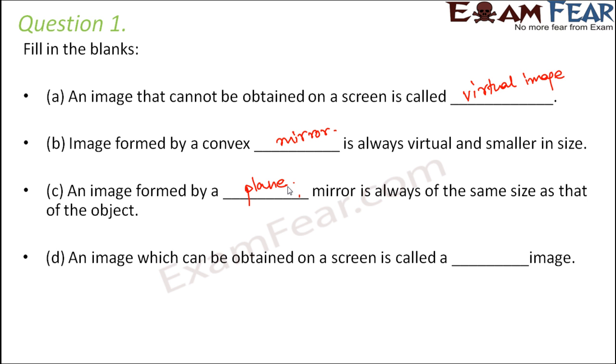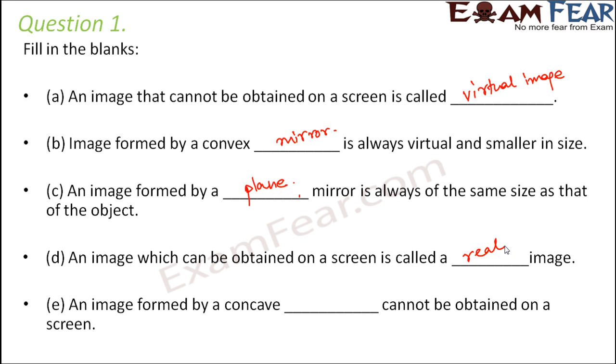An image which can be obtained on a screen is called a real image. An image formed by a concave dash cannot be obtained on a screen. Cannot be obtained means virtual image. And which type of mirror or lens always produces virtual image? A convex mirror or a concave lens. So here this would be concave lens.